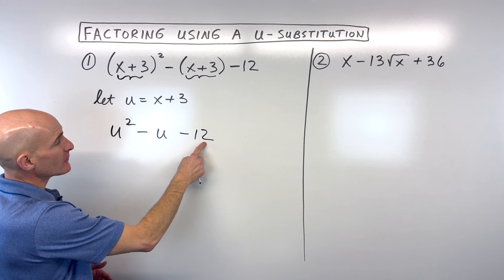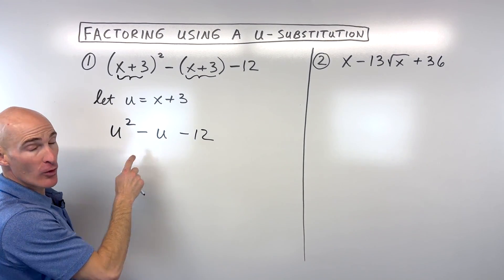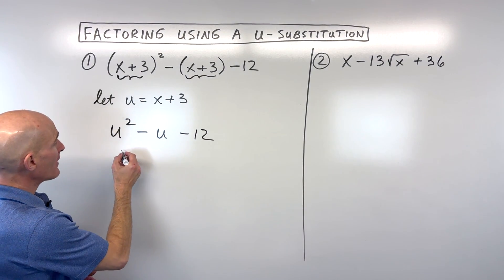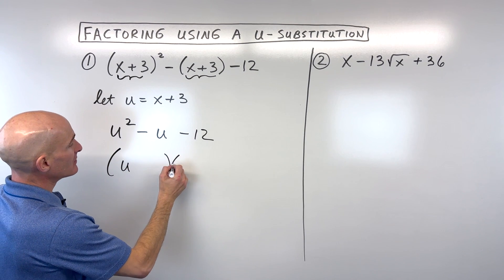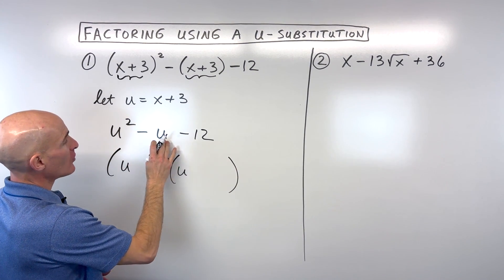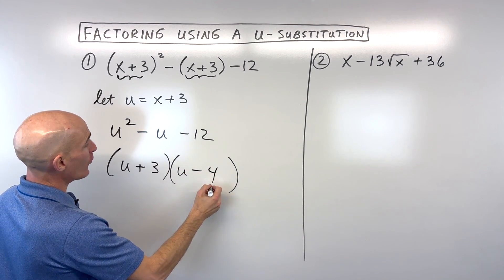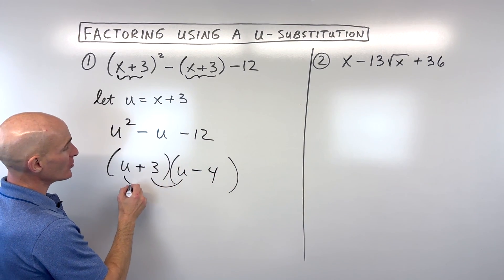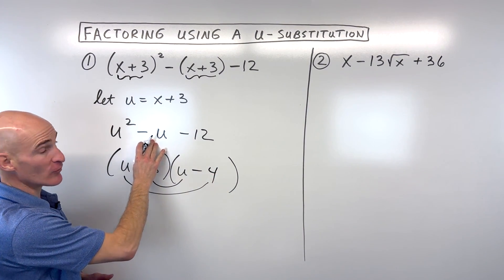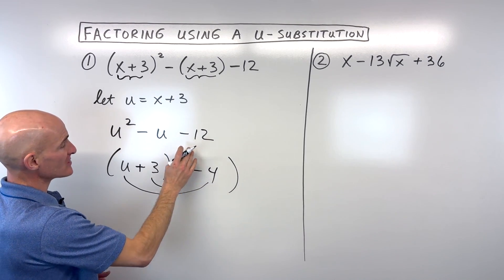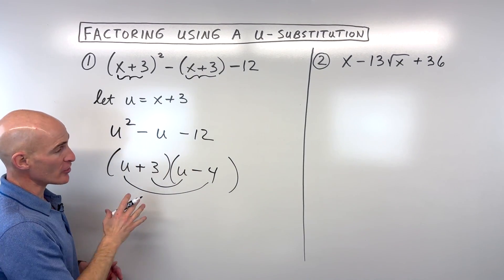So now what we're going to do is we're going to say, what two numbers multiply to negative 12 but add to this middle coefficient, negative 1? That's going to be positive 3 and negative 4, right? Because you can see this is 3u and negative 4u, which adds up to negative 1u. 3 times negative 4 is negative 12, and u times u is u squared.